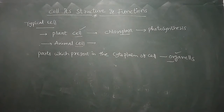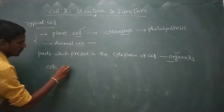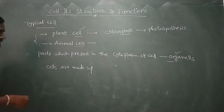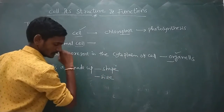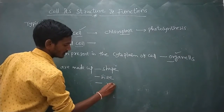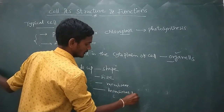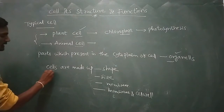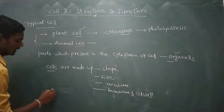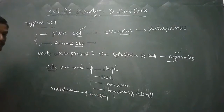Now regarding cell organelles, we have to discuss how the cells are made up — what is their shape and size, whether they have a membrane or cell wall, and what the function of that membrane is and how it performs its activities.